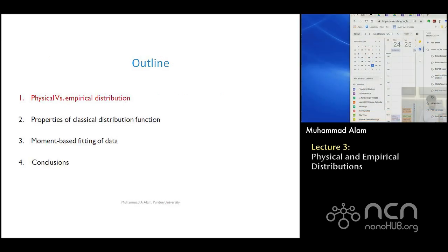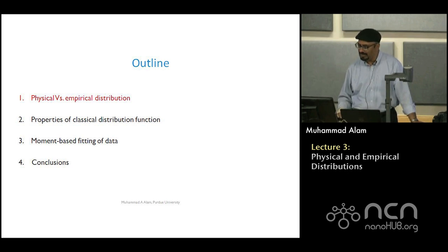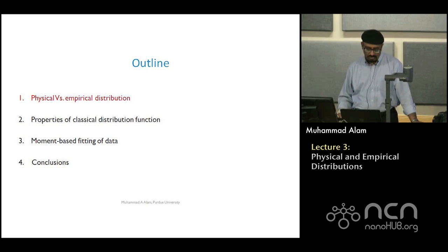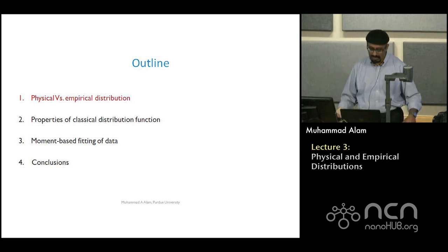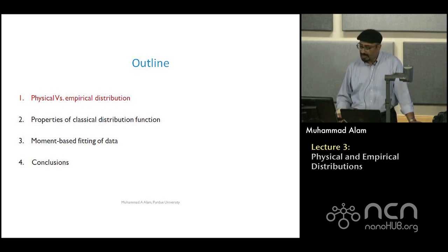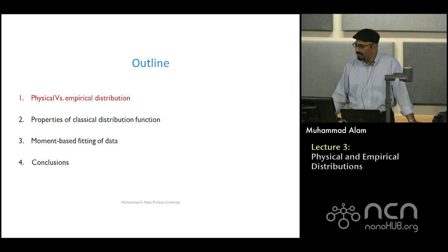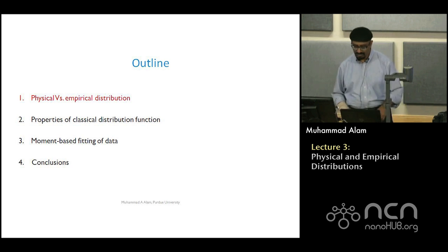I will talk about four things today. First, physical versus empirical distributions — the word empirical means experimental, while physical means derived from physics. Second, a set of well-known empirical distributions such as normal and Weibull. Third — where things get really interesting — how do you connect the data from the last two classes to a distribution? For example, how would you determine that your data is normally distributed, and what are the pitfalls if you do that?